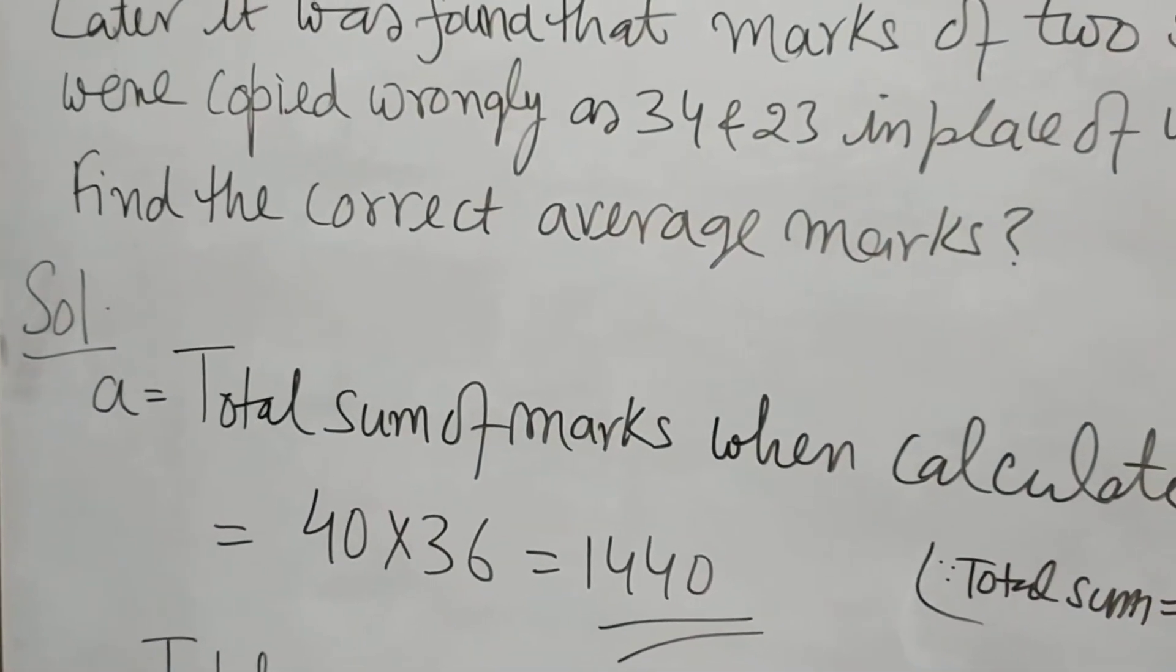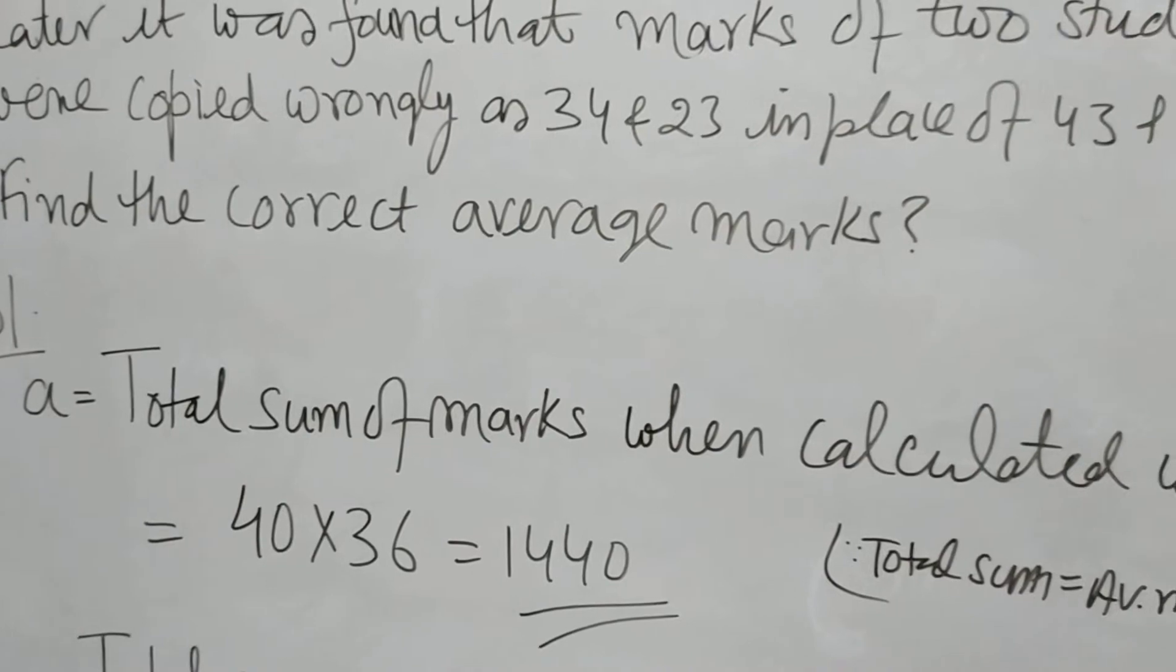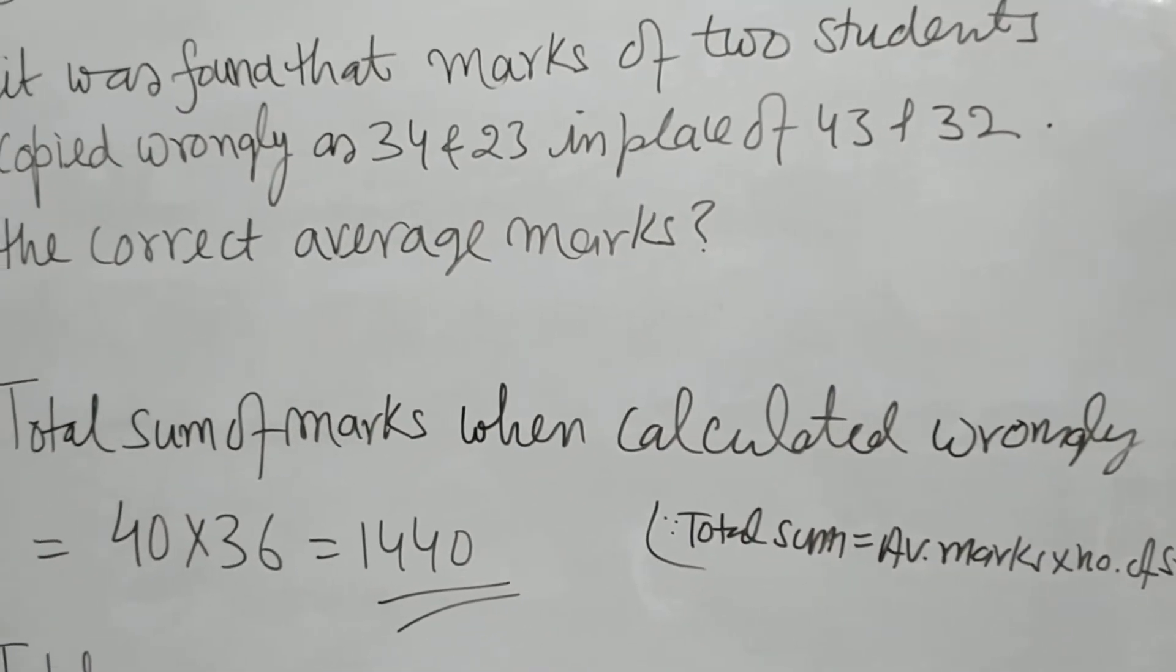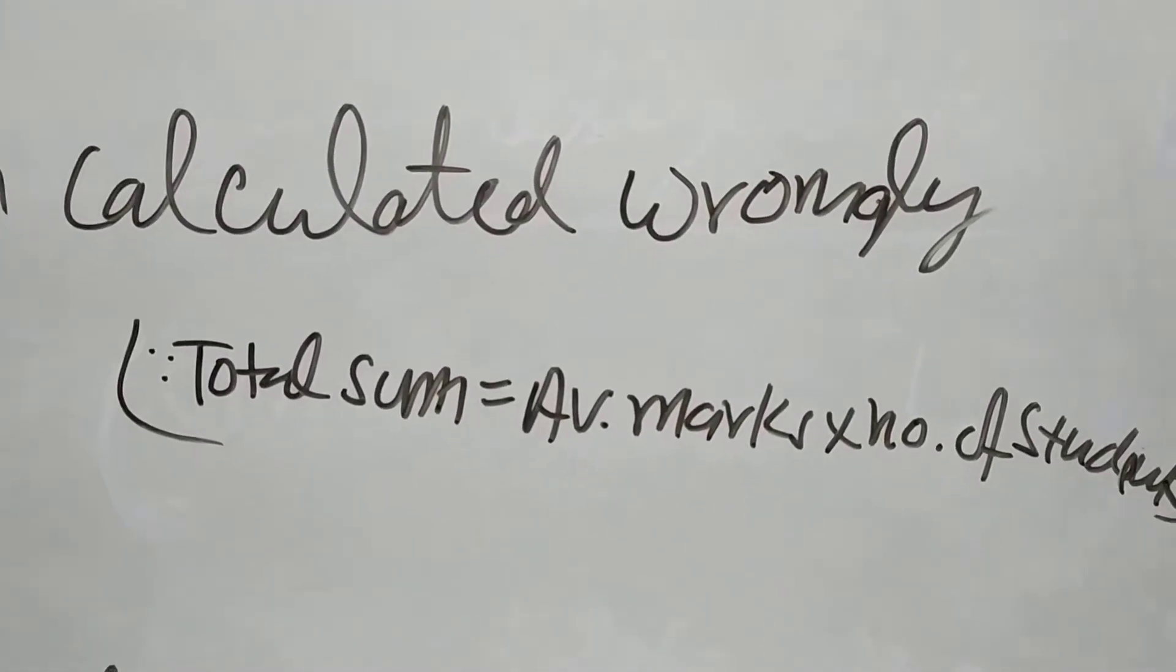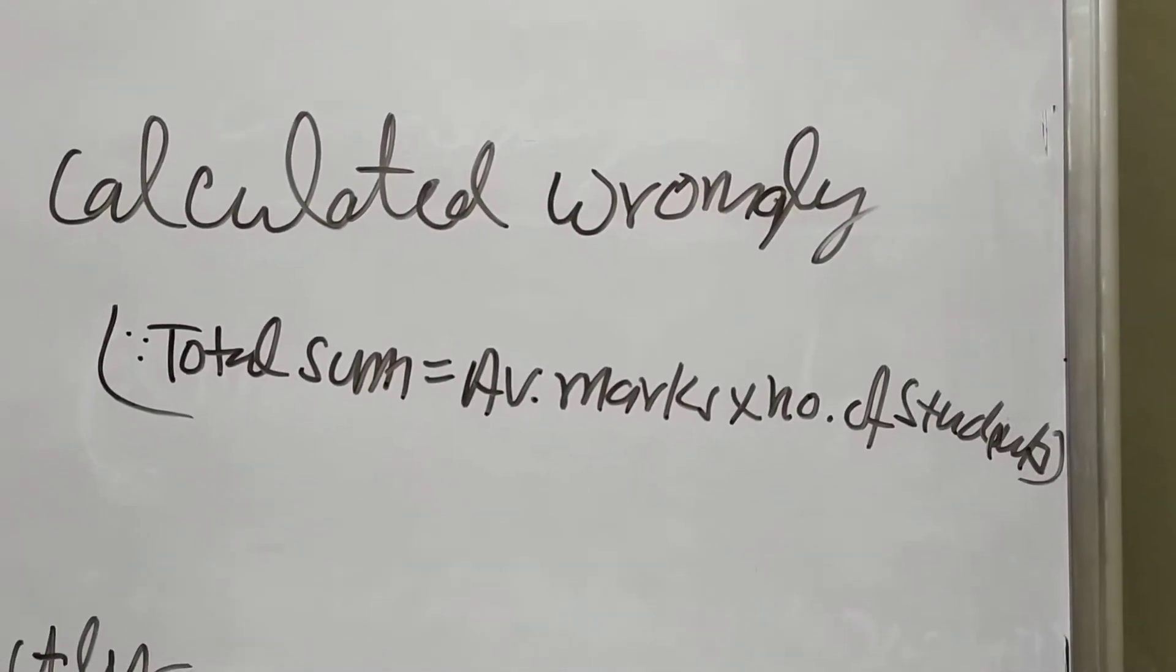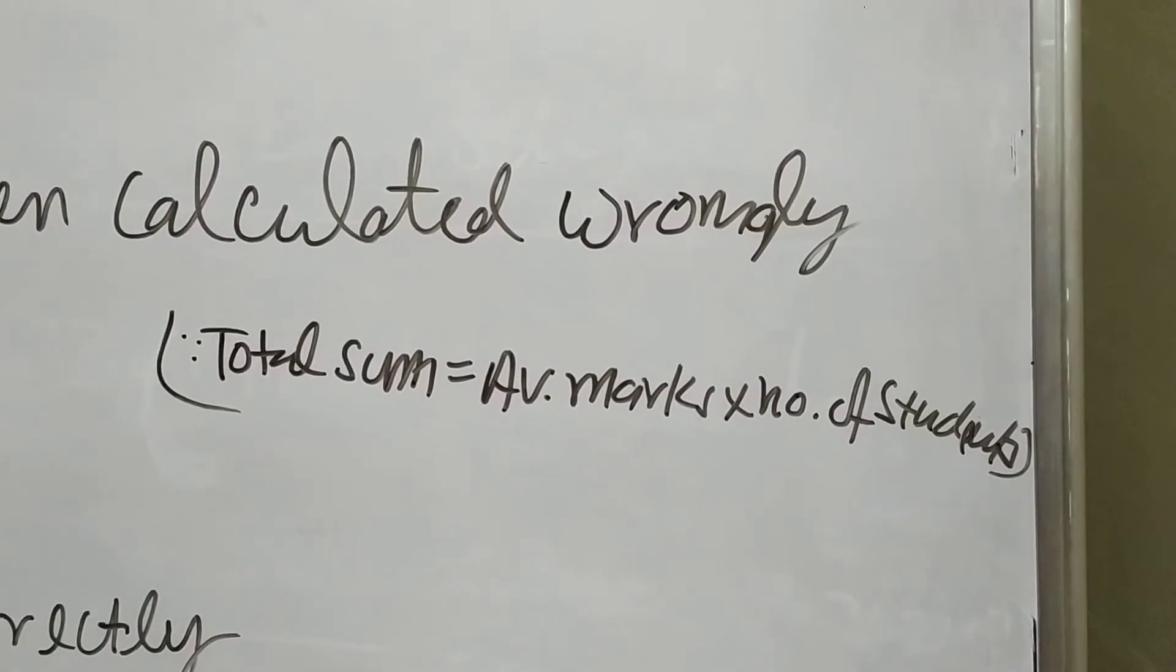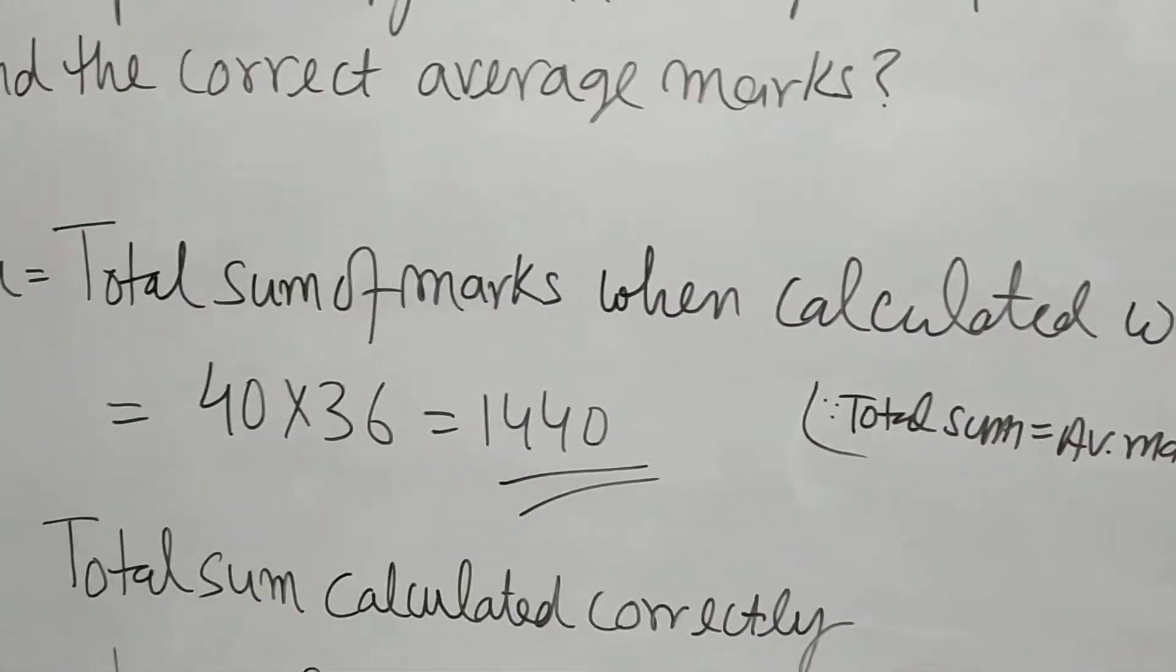Let A equal the total sum of marks when calculated wrongly. Formula: total sum equals average marks times number of students. This is the formula that we have to apply.